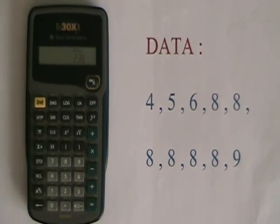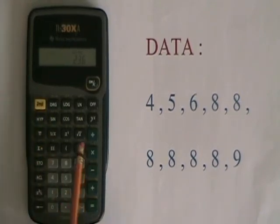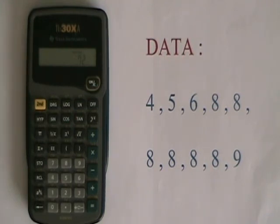The sum of all data values is quickly found with second open bracket, which is sigma x. The sum of the squares of all data values, sigma x squared, is found with second closed bracket.